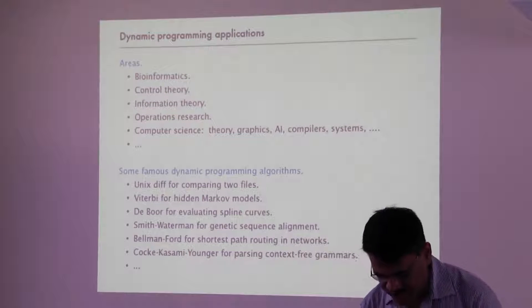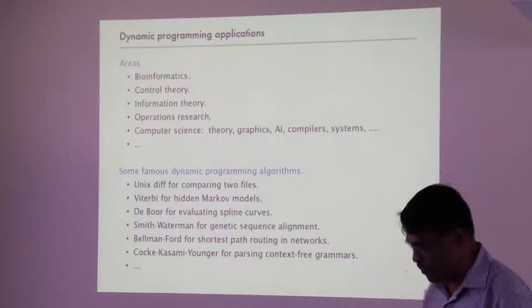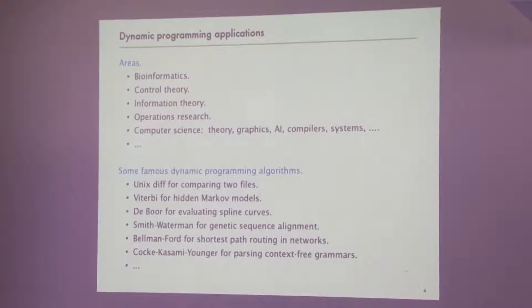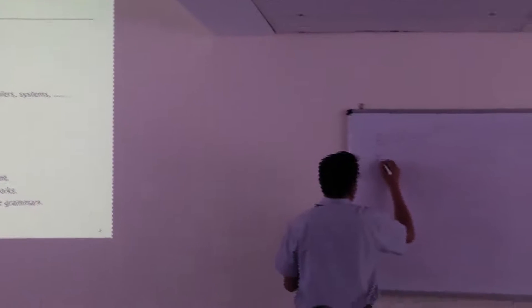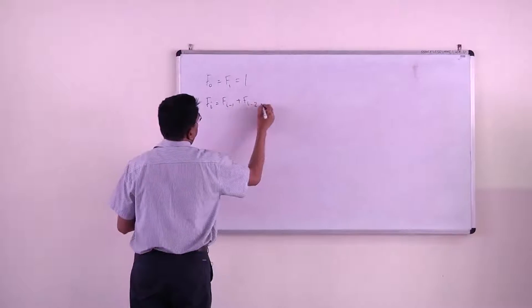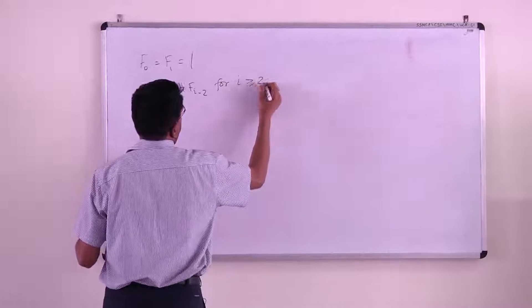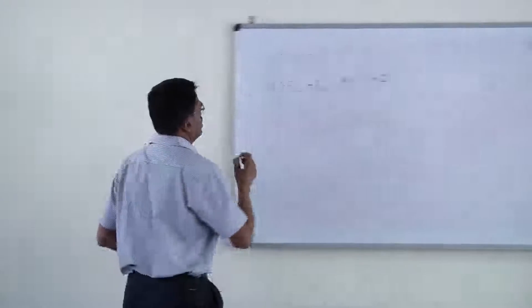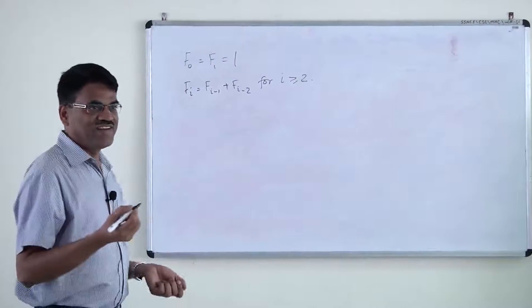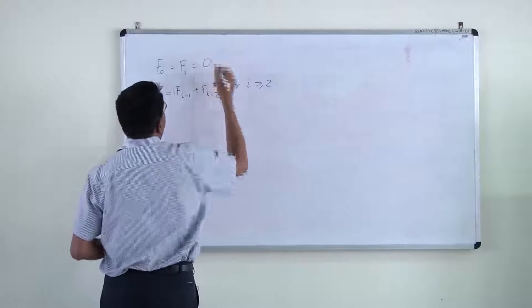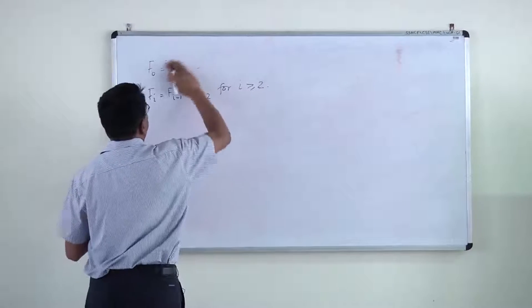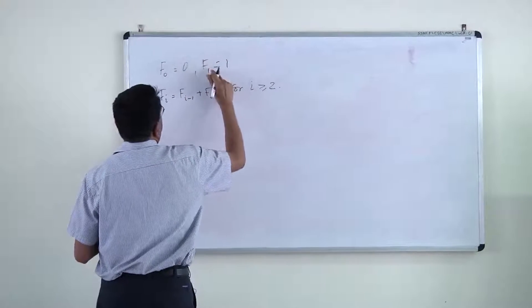I will start with a very simple example — computing a Fibonacci sequence. You all know what a Fibonacci sequence is: F(0) = 0, F(1) = 1, and F(i) = F(i-1) + F(i-2). The sequence goes 0, 1, 1, 2, 3, 5 and so on. The computational problem is: given some input n, compute F(n). We can easily write the recursive program for it: Fib(n) — if n equals 0, return 0; if n equals 1, return 1; else return Fib(n-1) + Fib(n-2).